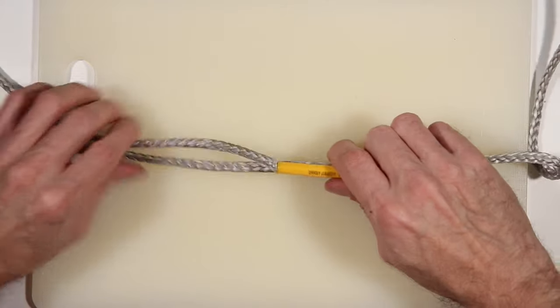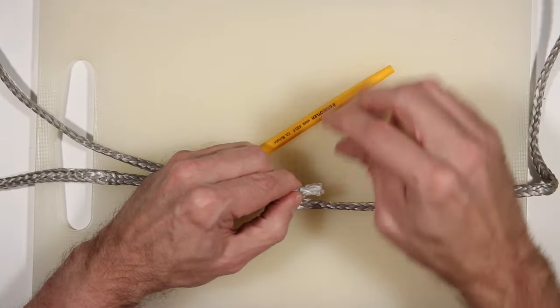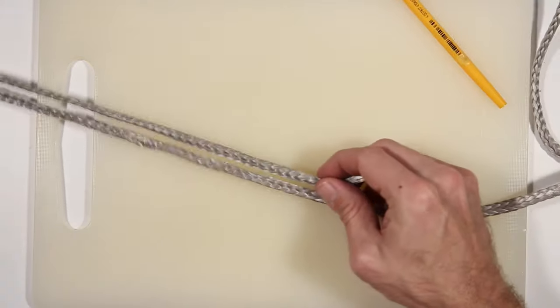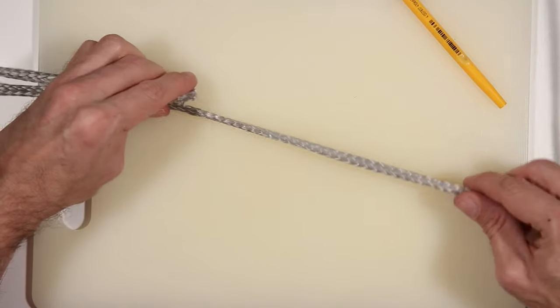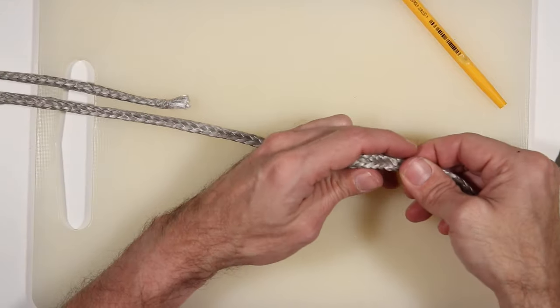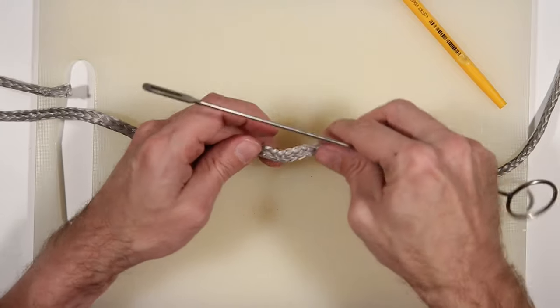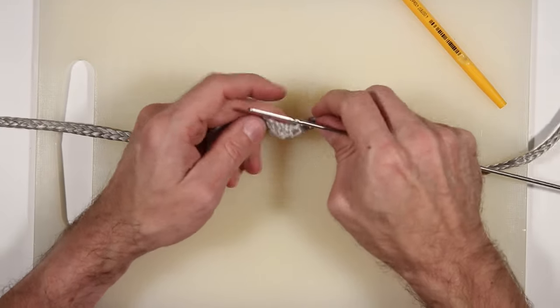If you've only got a Selma fid or the inside of a pen, you start at the eye end of the splice and thread the inside core back down through the line. Because of the length of line I have, I'm using a needle fid and passing it from the opposite end.